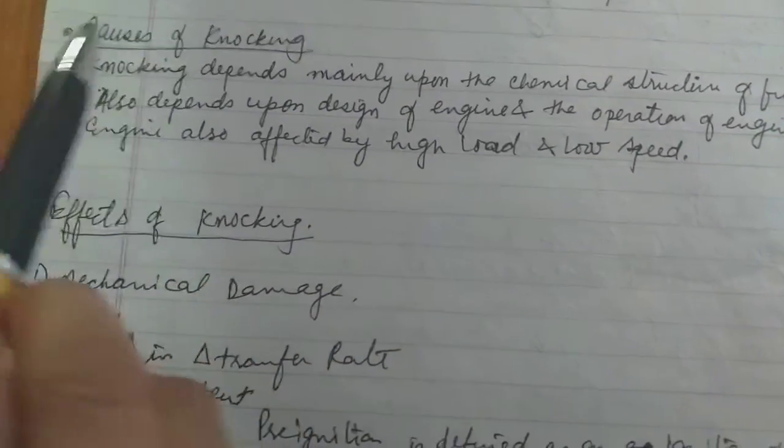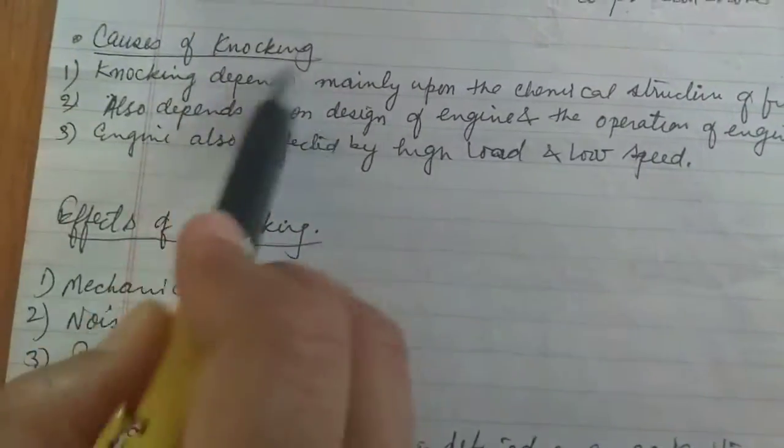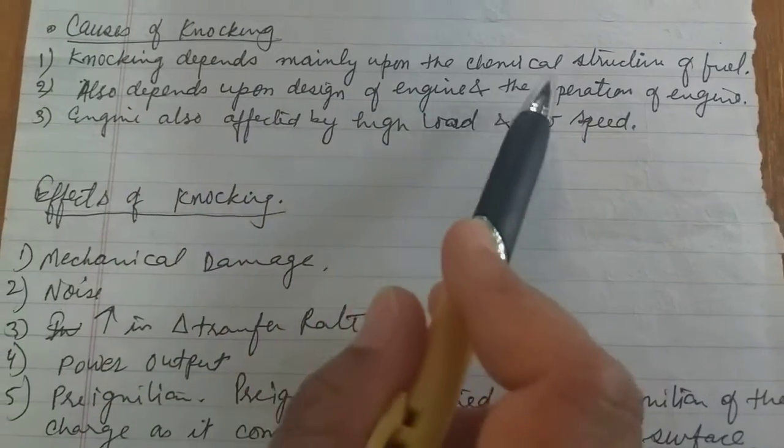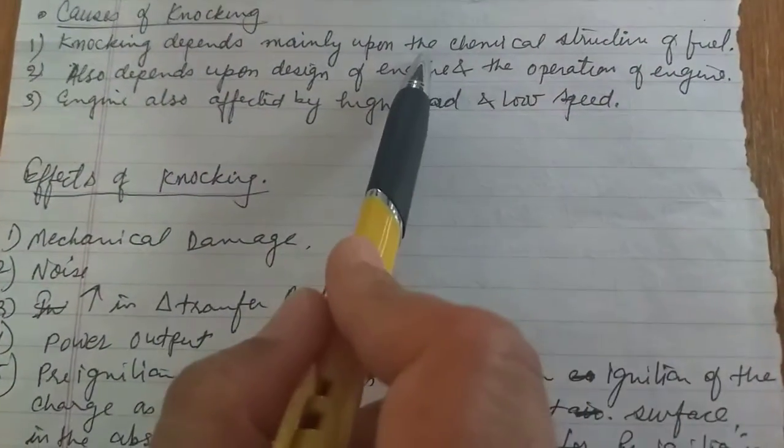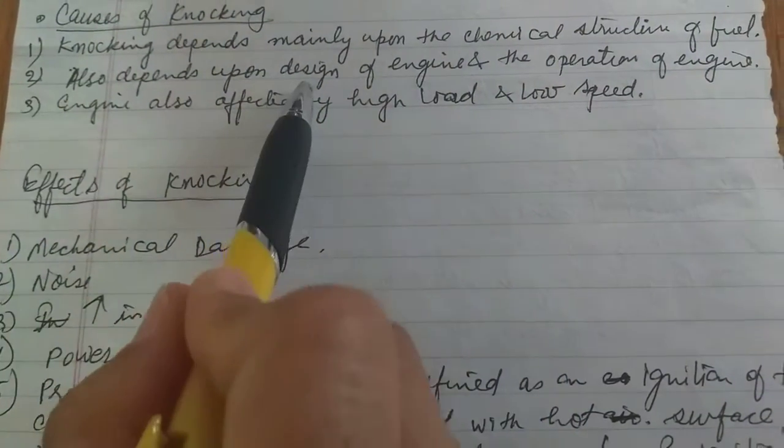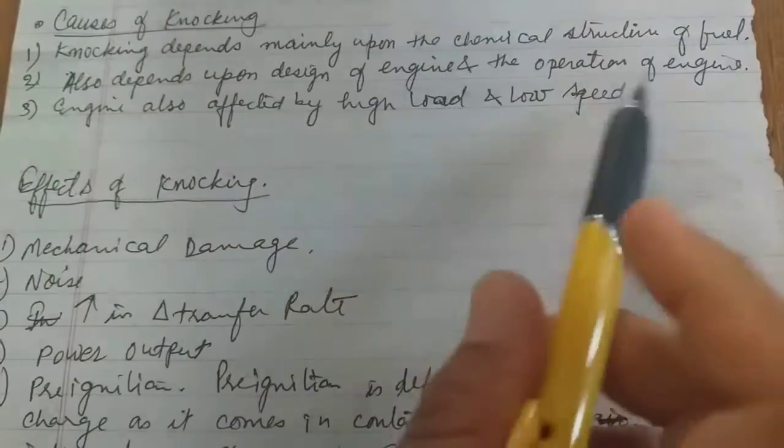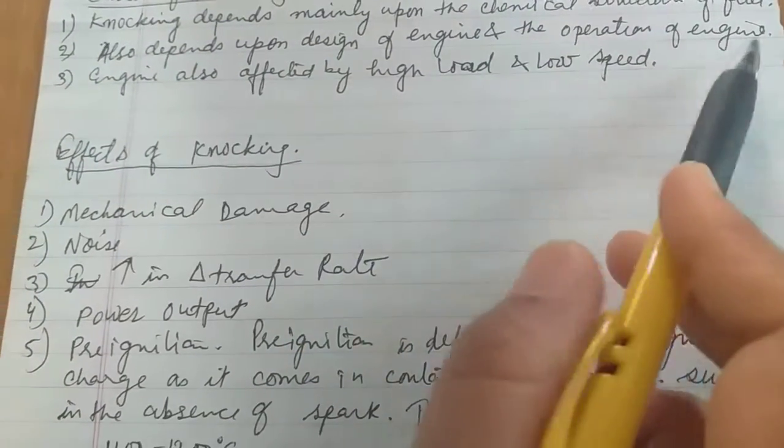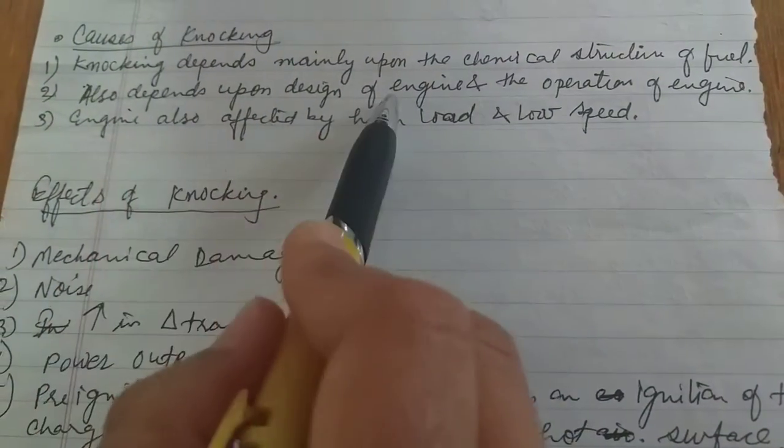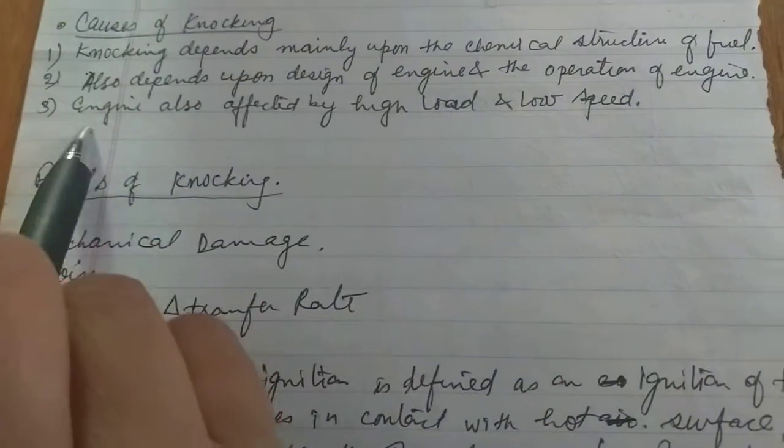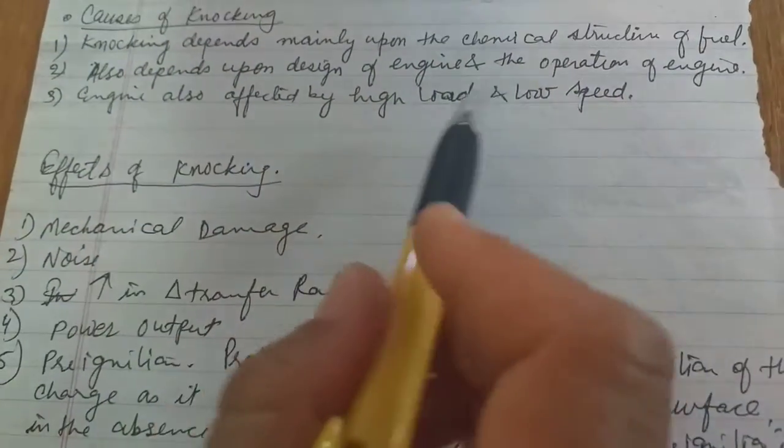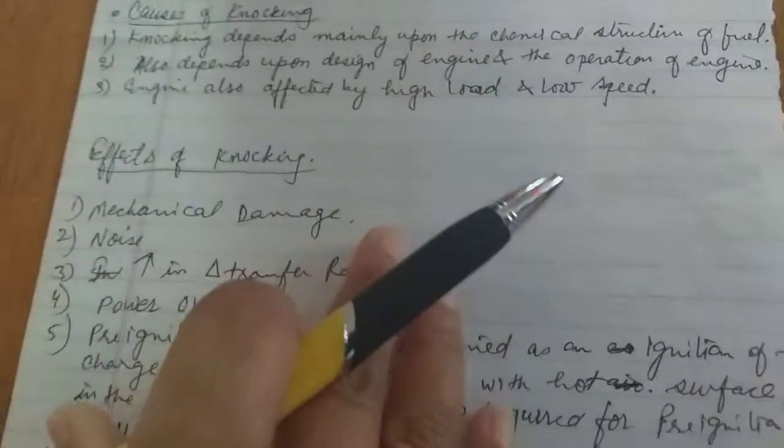Now, after knocking, what are the causes of knocking? The causes of knocking are: knocking depends upon the chemical structure of fuel, the design of engine and operations of the engine. Knocking also affects by high load and low speed of the engine.